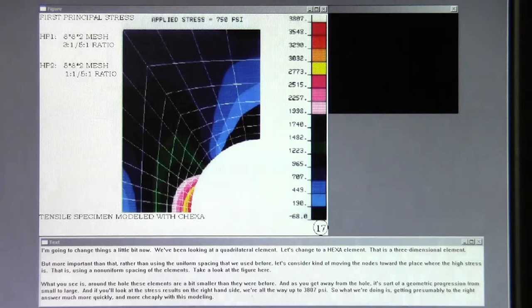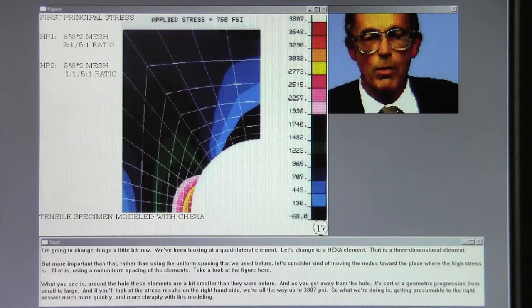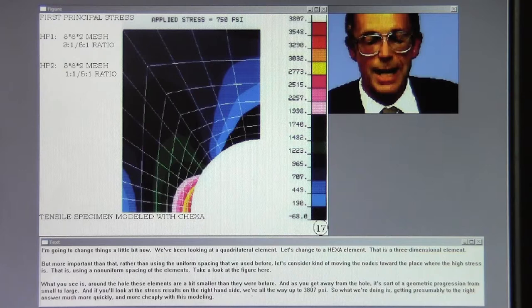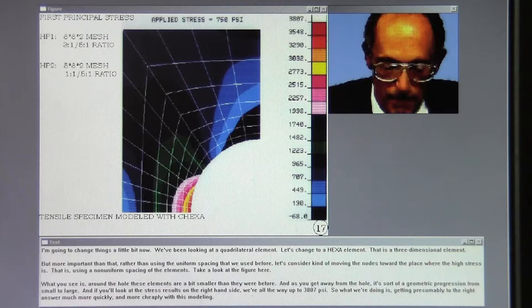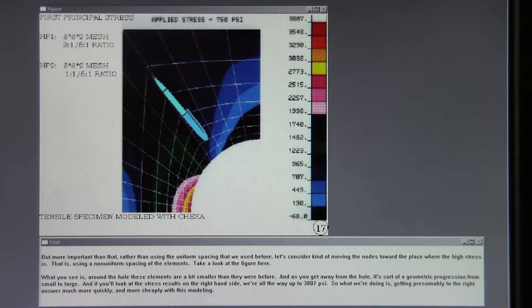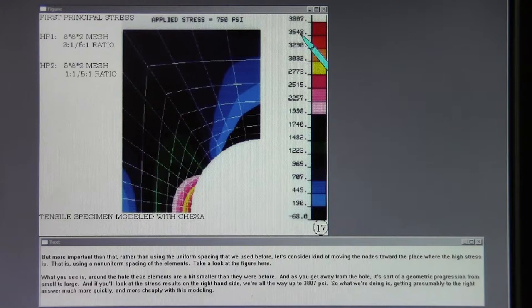I'm going to change things a little bit now. We've been looking at a quadrilateral element. Let's change to a hexa element that is a three-dimensional element. But more important than that, rather than using the uniform spacing that we used before, let's consider kind of moving the nodes toward the place where the high stress is that is using a non-uniform spacing of the elements. Take a look at the figure here. What you see is around the hole, these elements are a bit smaller than they were before. And as you get away from the hole, it's sort of a geometric progression from small to large. And if you look at the stress results on the right-hand side, we're all the way up to 3,807 psi. So what we're doing is getting, presumably, to the right answer much more quickly and more cheaply with this modeling.